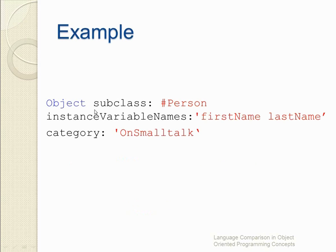Object is my meta class name. Subclass is Person. Here I have created a Person subclass from the Object class. I have two instance variables which are first name and last name. My category is on Smalltalk. Notice that this is a simple method called on the Object class which itself is an object. This creates two classes at runtime: one called Person and another one called Person class. The class Person is the sole instance of the class Person class. Person class is an instance of the meta class — in this case it's the Object.